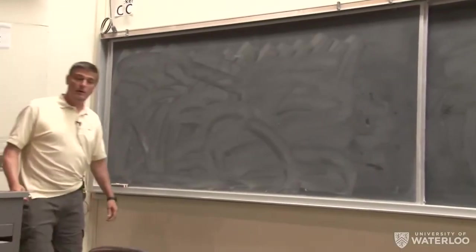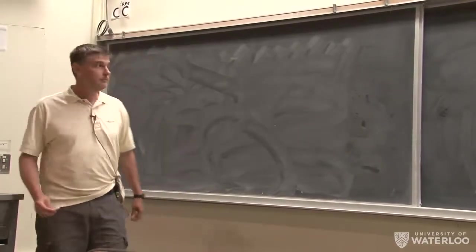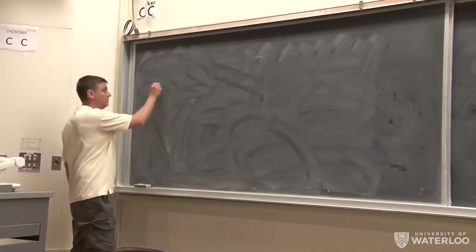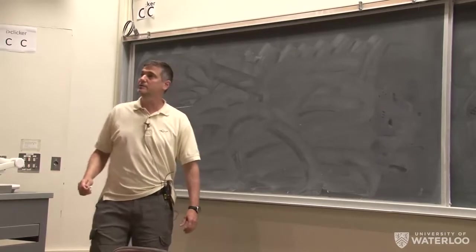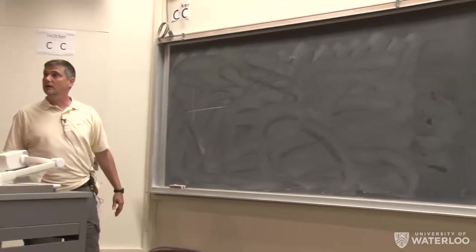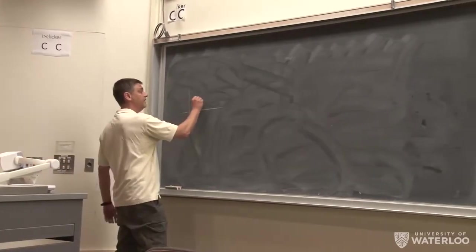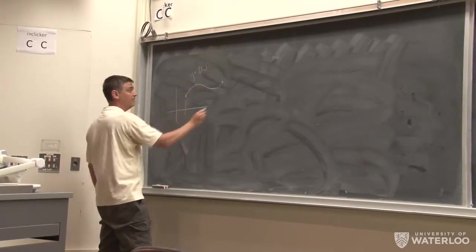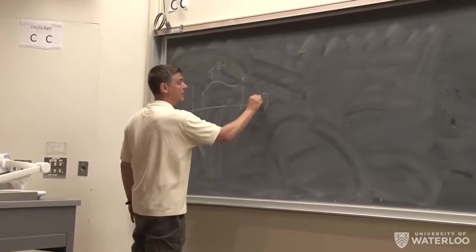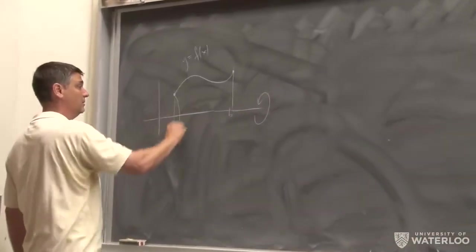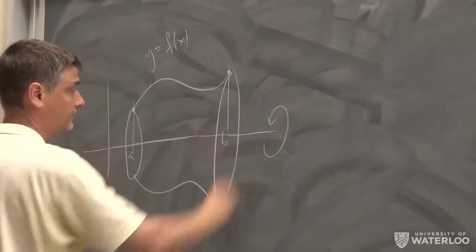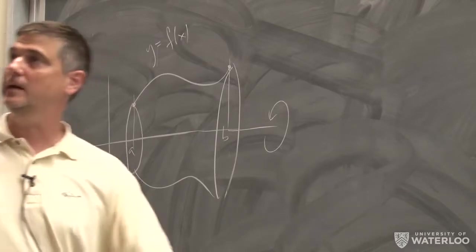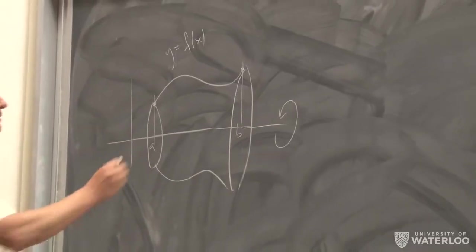I usually teach on the blackboard, so I'll do that — I don't usually use overheads. The first topic is about surface area. After you've talked about arc length or surface area, you can come up with a formula for calculating the surface area of a surface of revolution. If you have a function y = f(x) and you take its graph between a and b, and revolve that graph around the x-axis to form a surface, you can calculate the surface area. Let's suppose we've already done that — here's a quick review.